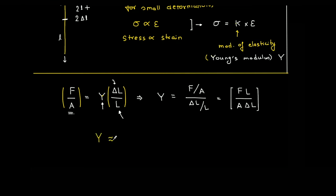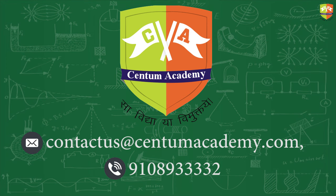The value of Young's modulus is typically of the order of 10 to the power of 9 Newton per meter squared — very high. If Young's modulus is high, it means the material has a high resistance against deformation; for a very small value of delta L by L, the restoring stress is very large, meaning the material is stronger. So a higher Young's modulus indicates a stronger, more rigid material.